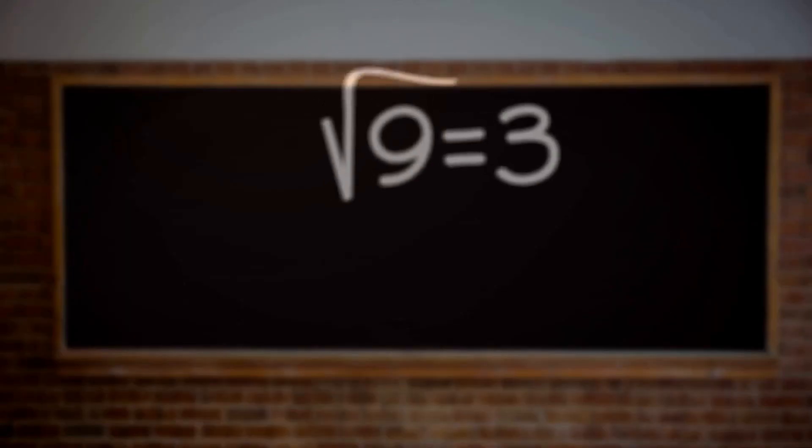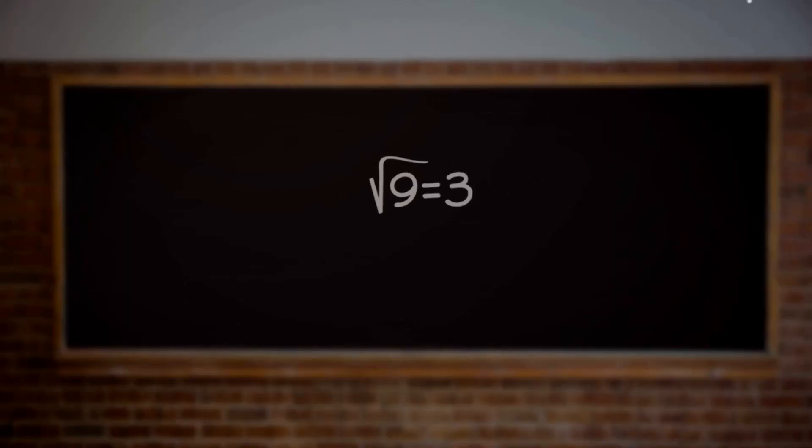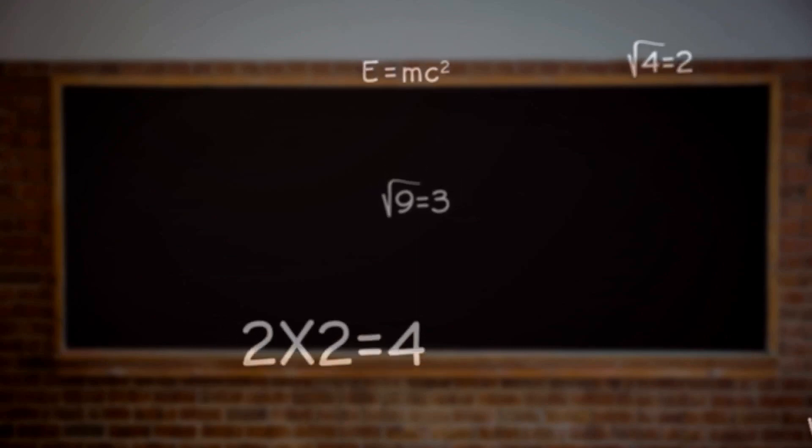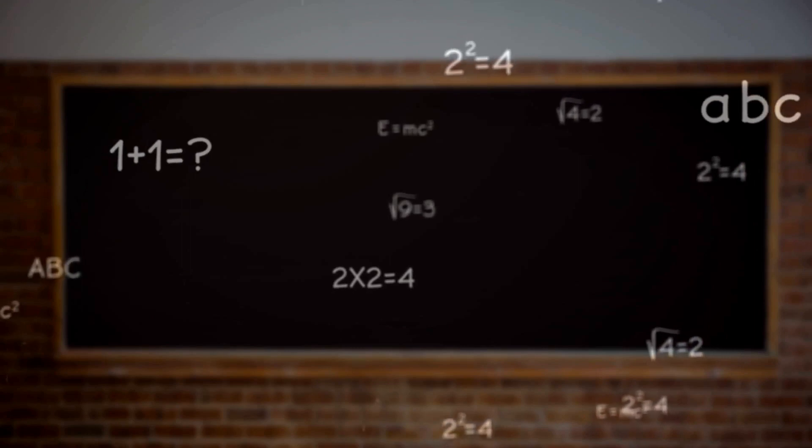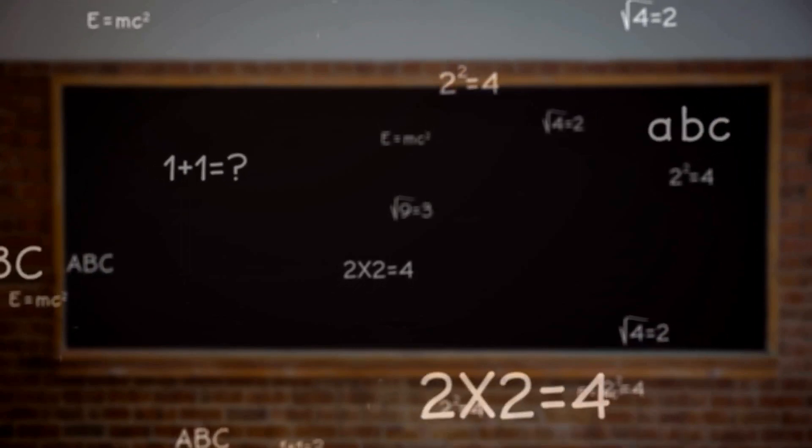He contends that neither the primordial environment from which life evolved, nor the laws that govern the universe, are information rich enough to account for the complexity and diversity we observe in life on Earth today.